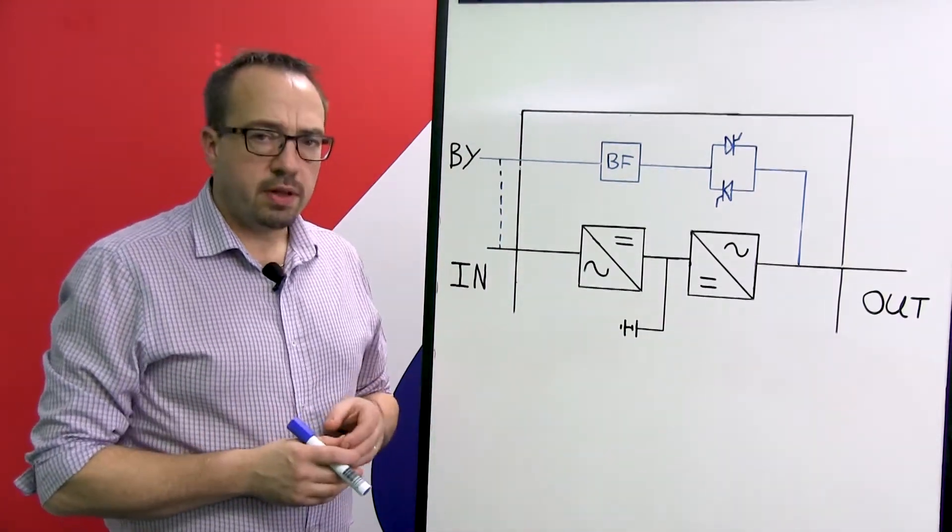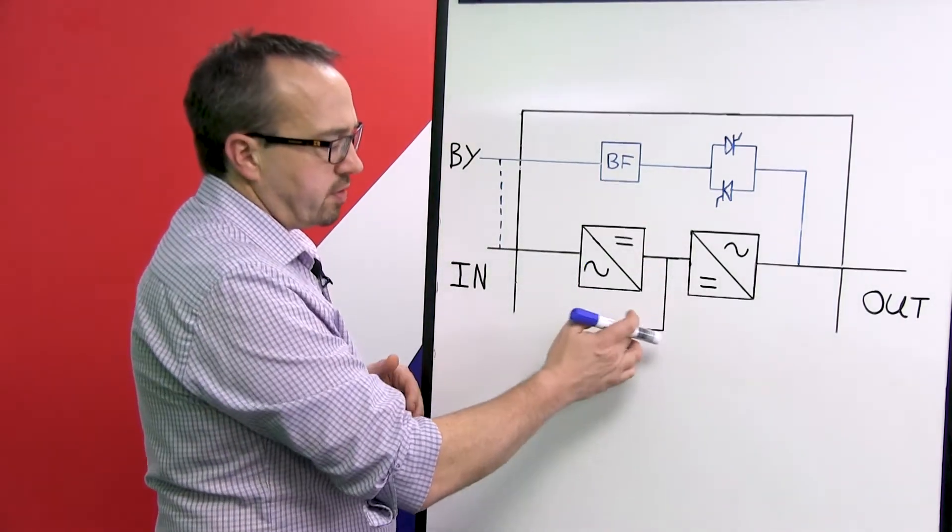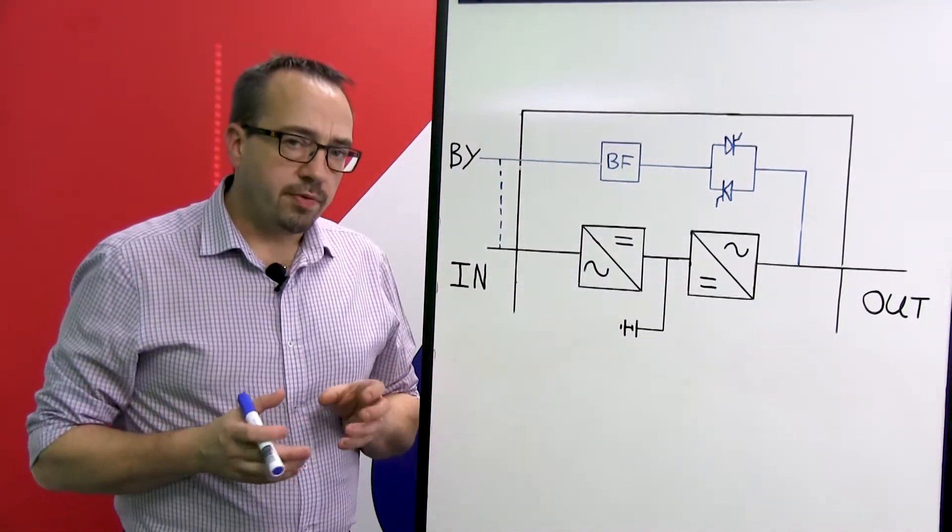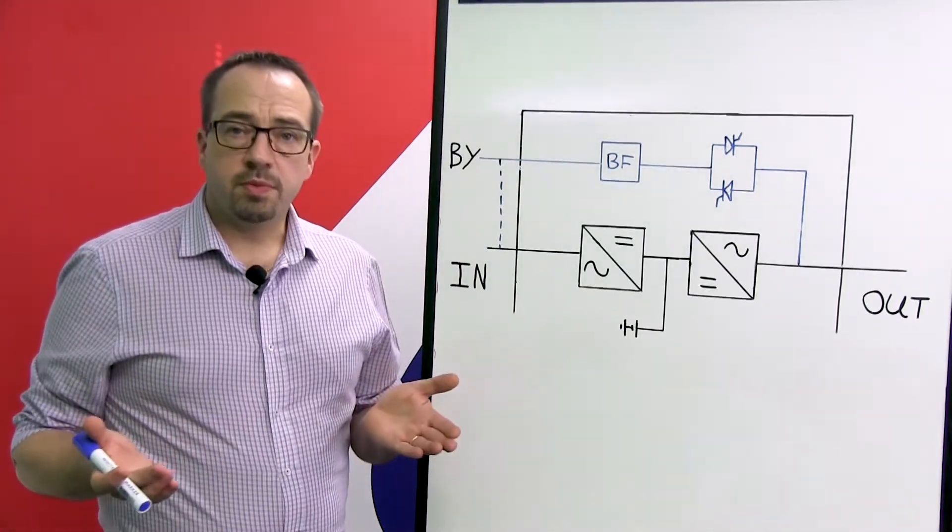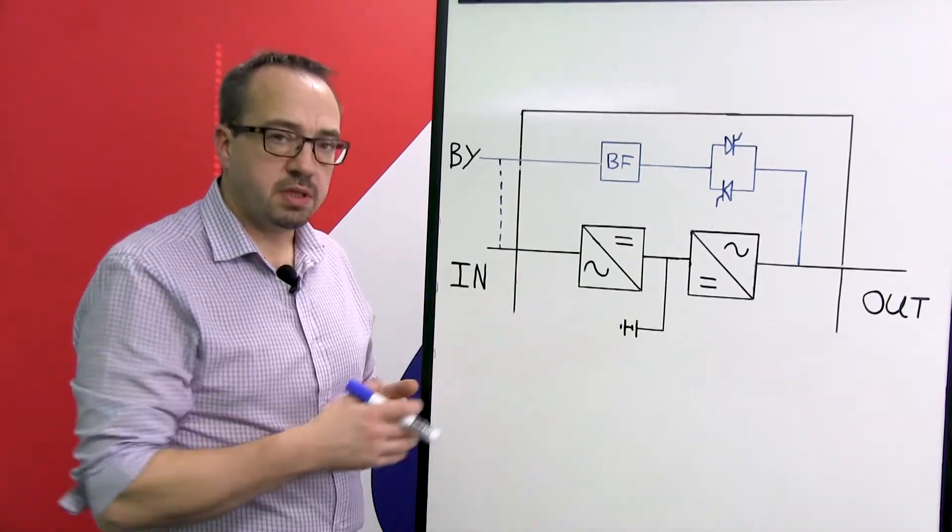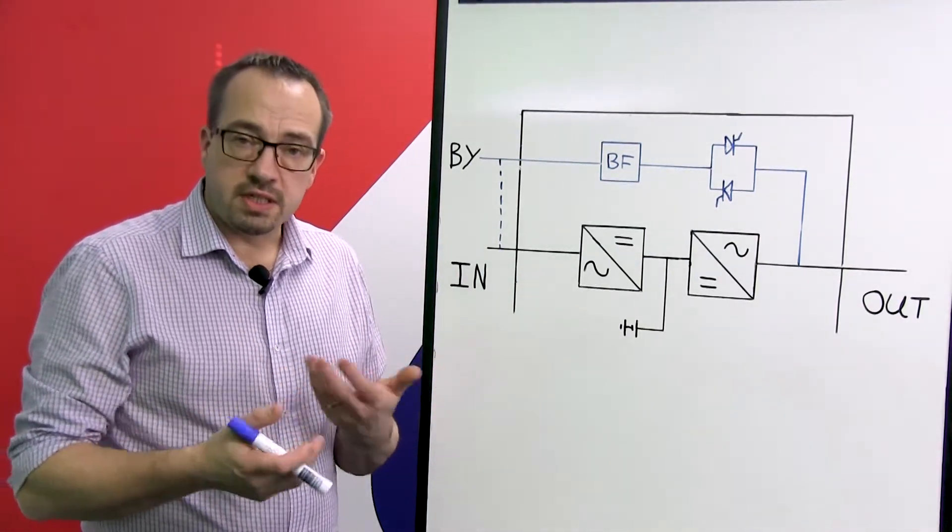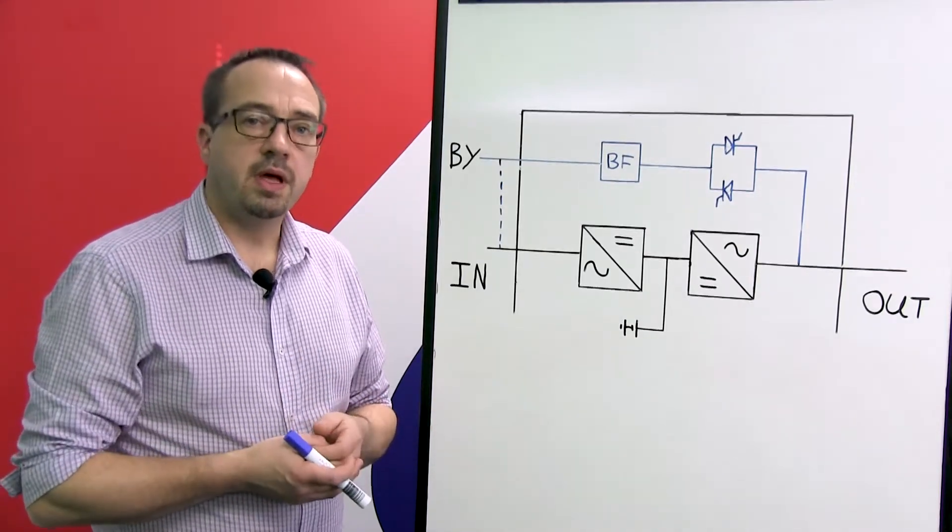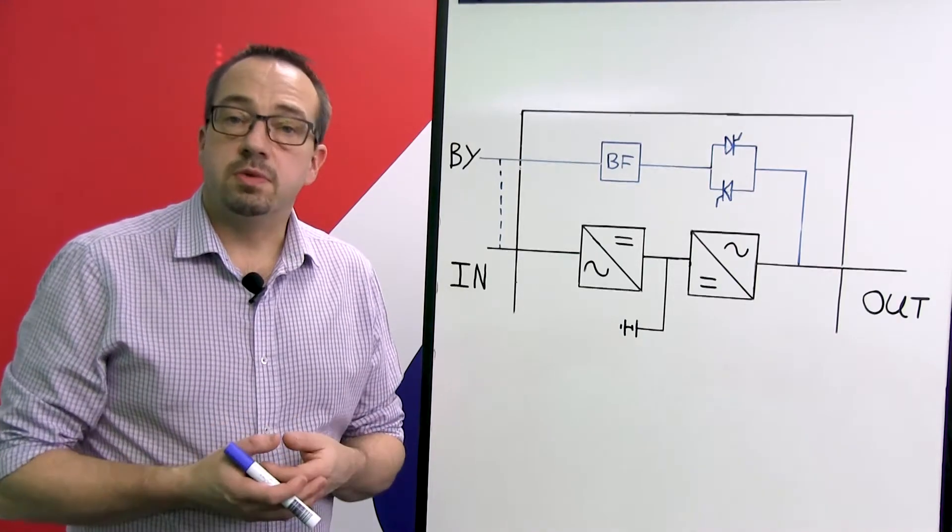Now in between the rectifier output and the inverter input are connected the batteries. Depending on the type of UPS will determine how those batteries are connected. Some systems will use a direct connection where the batteries are connected directly onto the DC bus. Some systems will use an IGBT based switching technology via a buck boost system, and some systems will utilize a thyristor based switching mechanism.